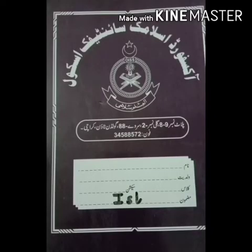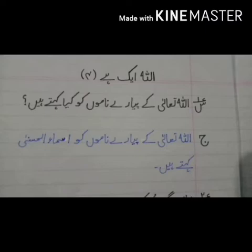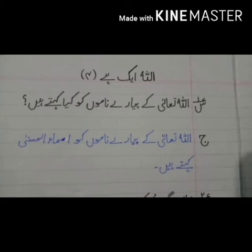سوال نمبر تین: الخالق کے کیا معنے ہیں؟ جواب: الخالق کے معنے ہیں پیدا کرنے والا۔ اب تمام اسٹوڈنٹس نے ان تینوں سوالات کی لکھنے کرنی ہے۔ اور ہم سوال نمبر ایک کاپی میں رائٹ کریں گے۔ اب آپ نے اسلامیات کاپی اوپن کرنی ہے۔ سب سے پہلے ہم اسکیچ ریڈی کریں گے، ریڈ لائن کے درمیان میں سبق کا نام لکھیں گے — اللہ ایک ہے، اور بریکٹ میں سبق کا نمبر لکھیں گے جو کہ چار ہے — اور لیفٹ سائڈ پر ڈیٹ رائٹ کریں گے۔